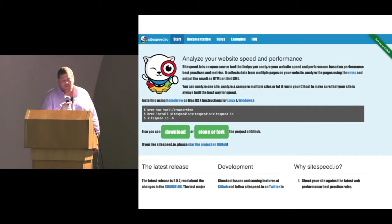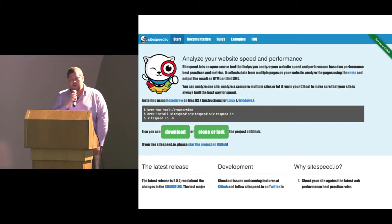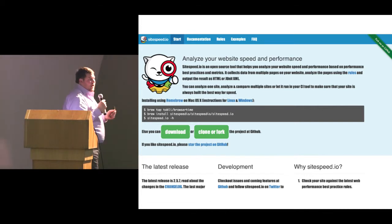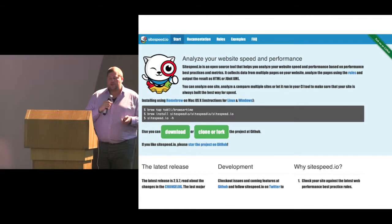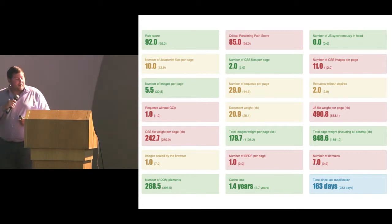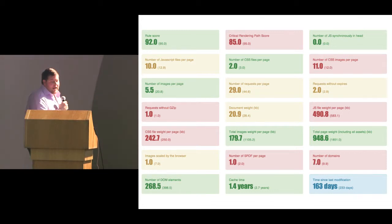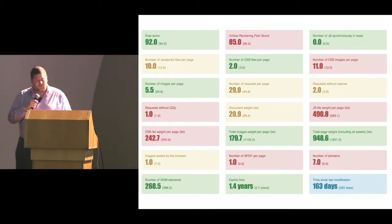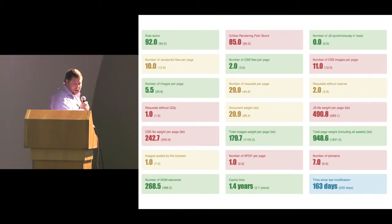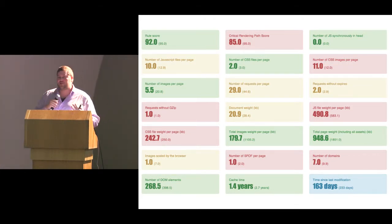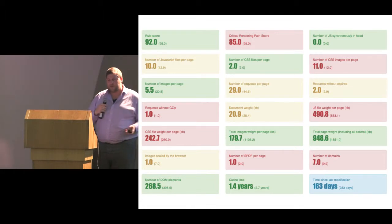On Mac you can install SiteSpeed.io easily using Homebrew. The sitespeed.io command with -h and a host gives you benchmarks including the PageSpeed score, end user latency, number of DOM elements, and many useful client-side metrics. It gives you useful metrics like document weight, JavaScript file weight, CSS weight, how many requests didn't have gzip encoding, how many didn't have caching, how many domains were involved, and how much time was spent on SSL negotiation versus DNS lookups.